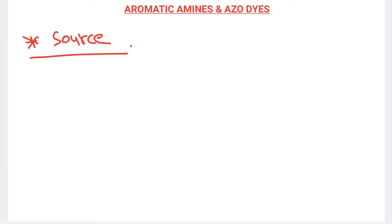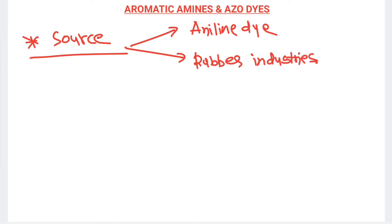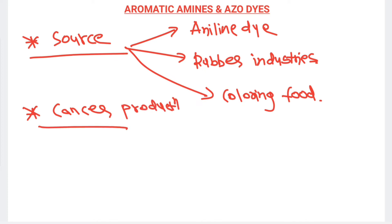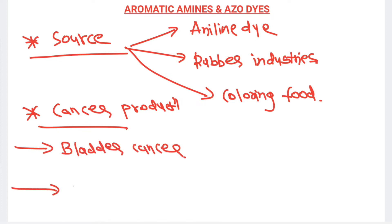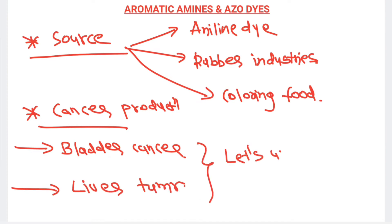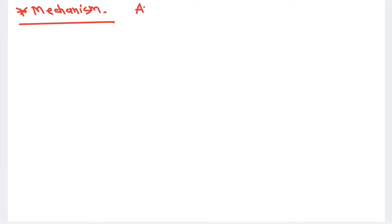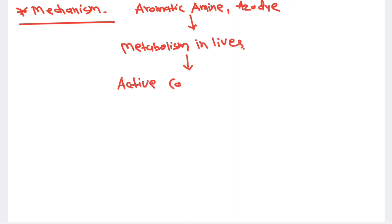The sources of aromatic amines and azodyes include aniline dye industries, rubber industries, and coloring food. They lead to two types of cancer: bladder cancer and liver cancer. Aromatic amines and azodyes are metabolized in the liver and converted into active carcinogens, which is why they can cause liver cancer.